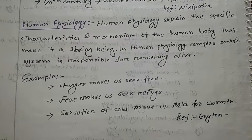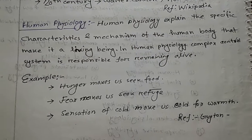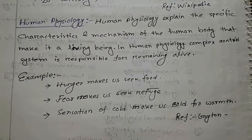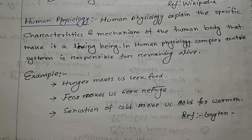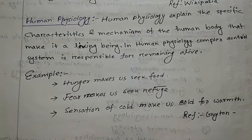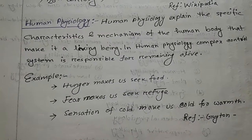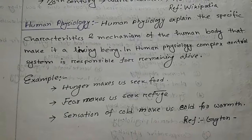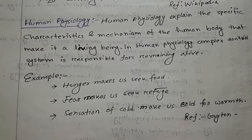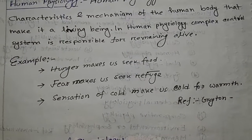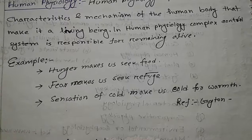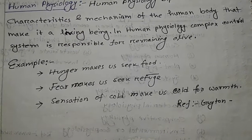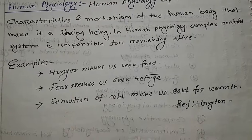Now, the definition of human physiology. Human physiology explains the specific characteristics and mechanisms of the human body that make it a living being. In human physiology, a complex control system is responsible for remaining alive. For example, hunger makes us seek food, fear makes us seek refuge, and the sensation of cold makes us seek warmth.